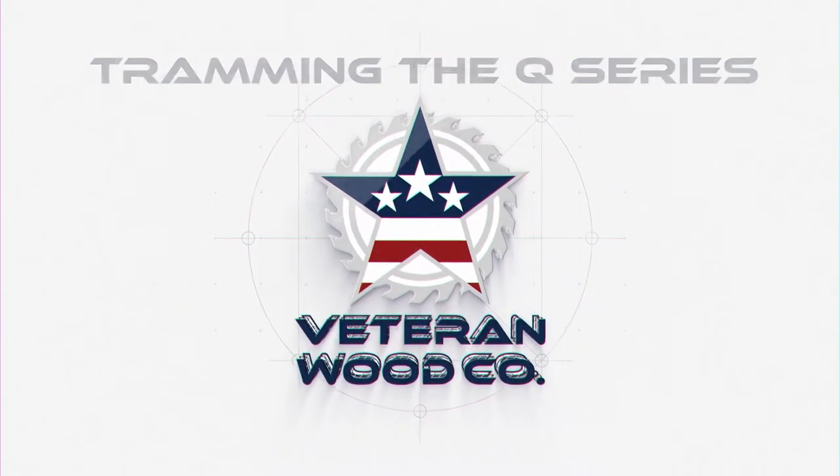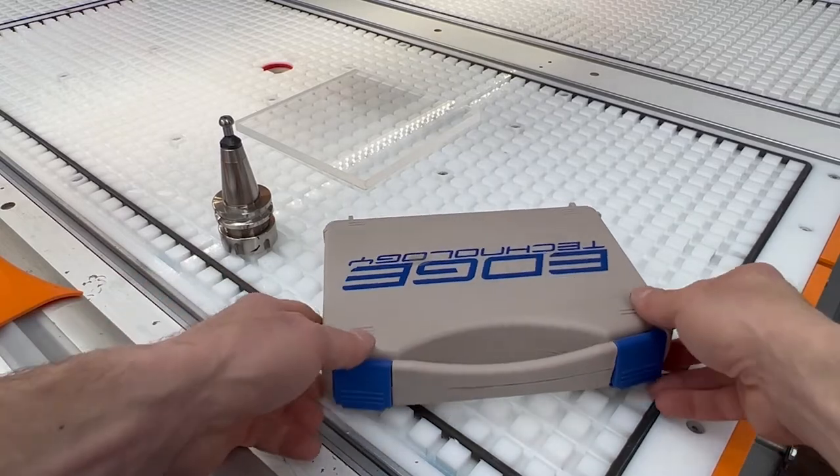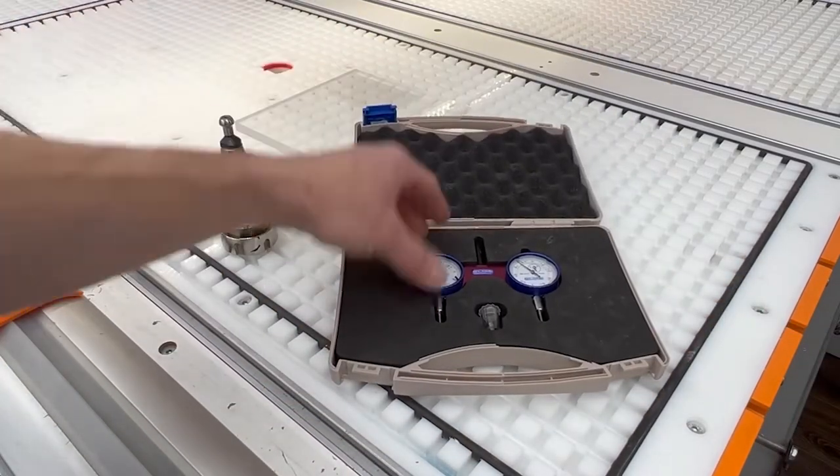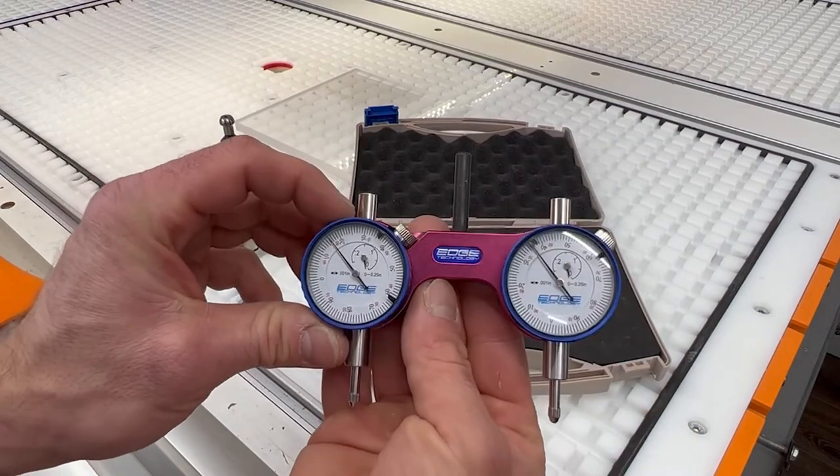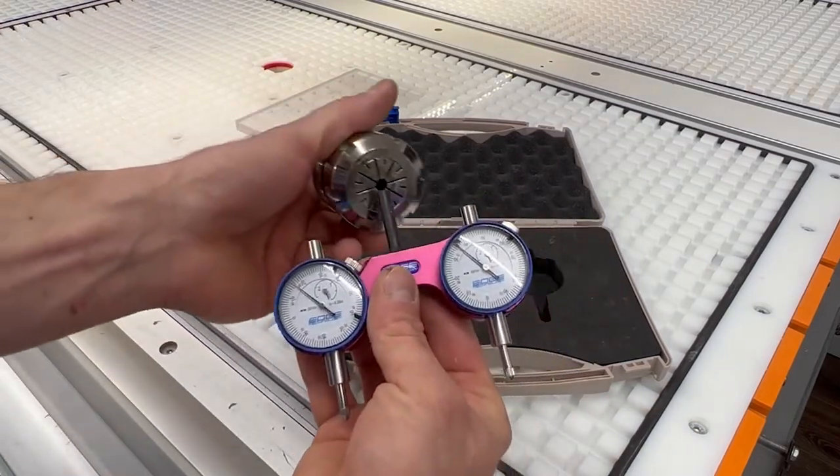Tramming the Q Series with Mike from Veteran Wood Co. I'll be using the Pro Edge Technologies quarter inch shank double tram gauge which I bought off Amazon. Cost about $100. I'll put the link in the description.